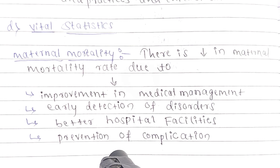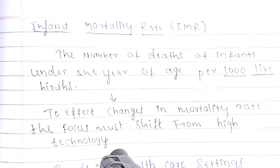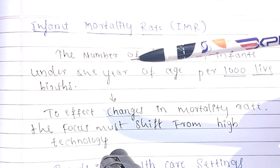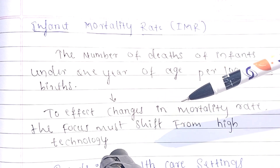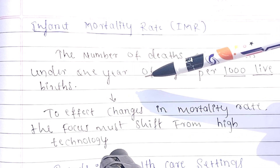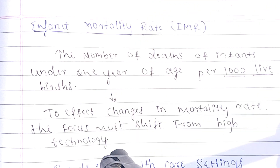The next point is infant mortality rate — the number of deaths of infants under one year of age per 1000 live births. To effect change in the mortality rate, the focus must shift from high technology. Infant mortality rate refers to the death rate of children under one year of age.